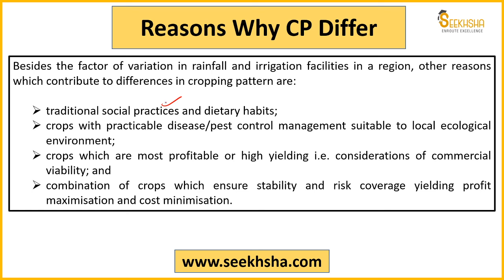Apart from rainfall, other factors include traditional social practices, regional dietary habits which vary across India, disease and pest control management at the local level, profitability of crops in different regions, and which crop farmers consider stable — good yield, marketable, low disease risk, and low cost. These are reasons why cropping patterns differ across different areas of India.